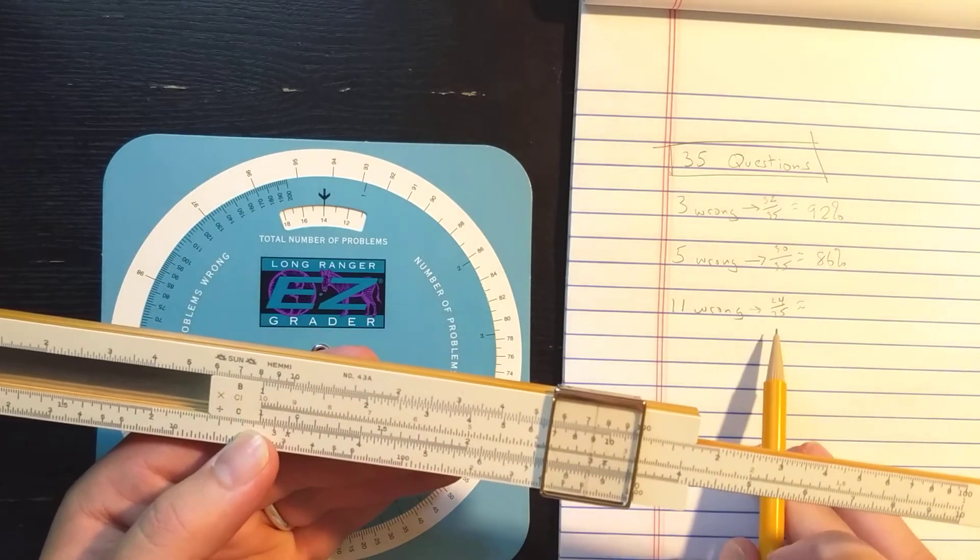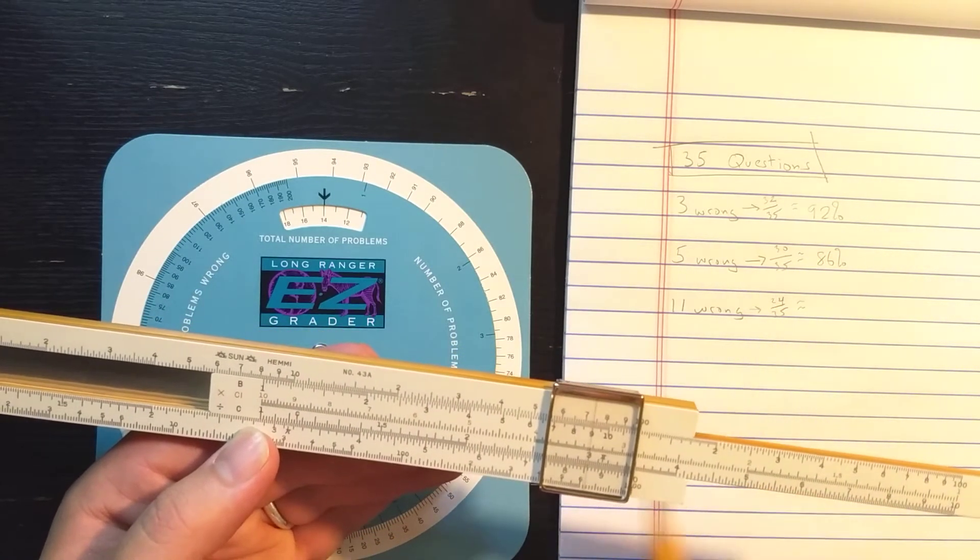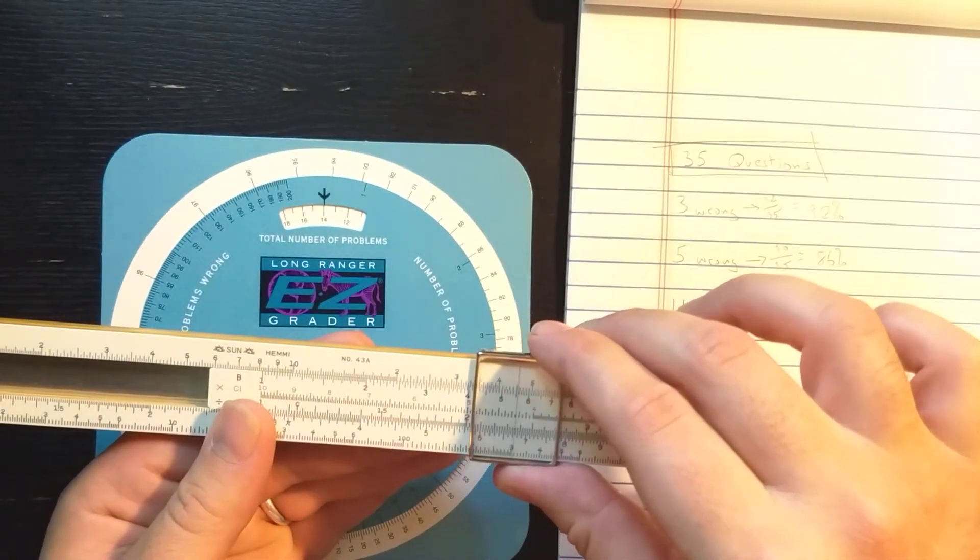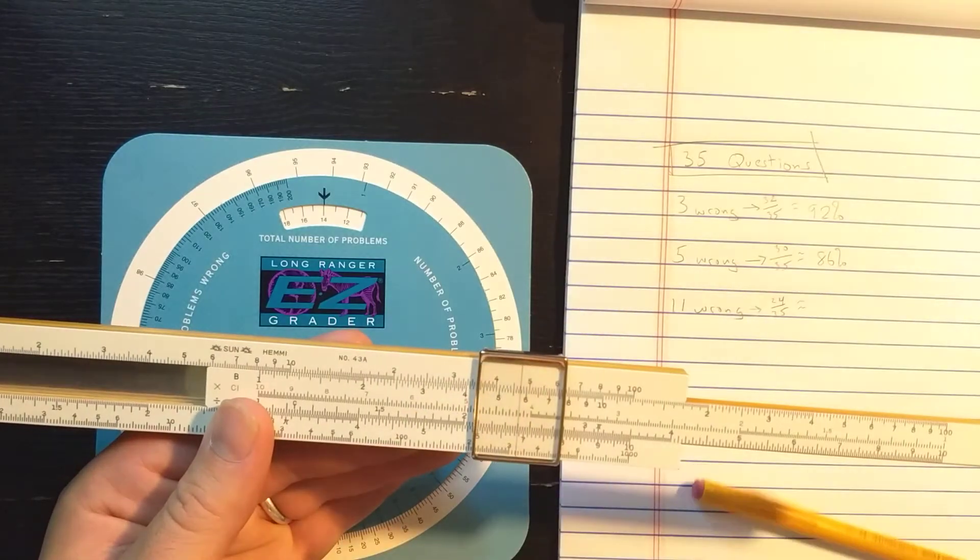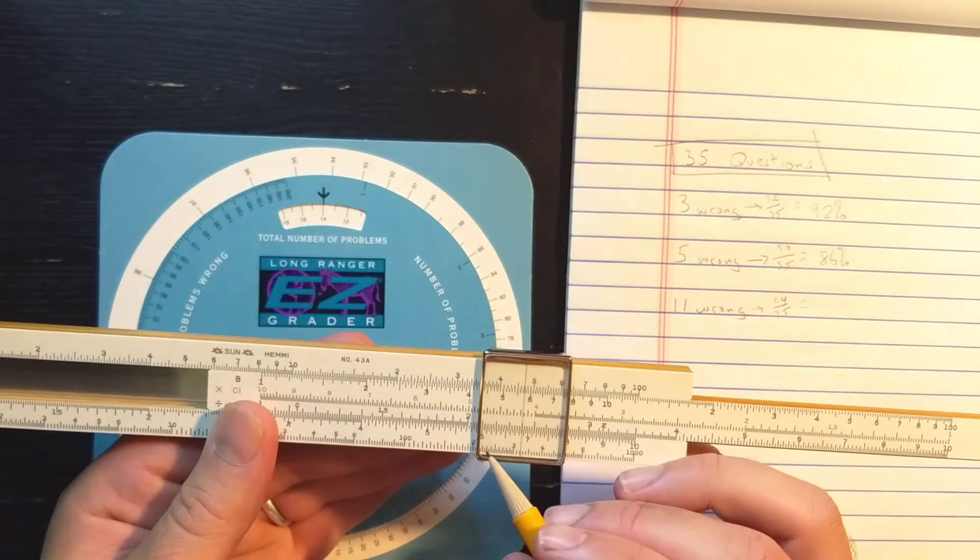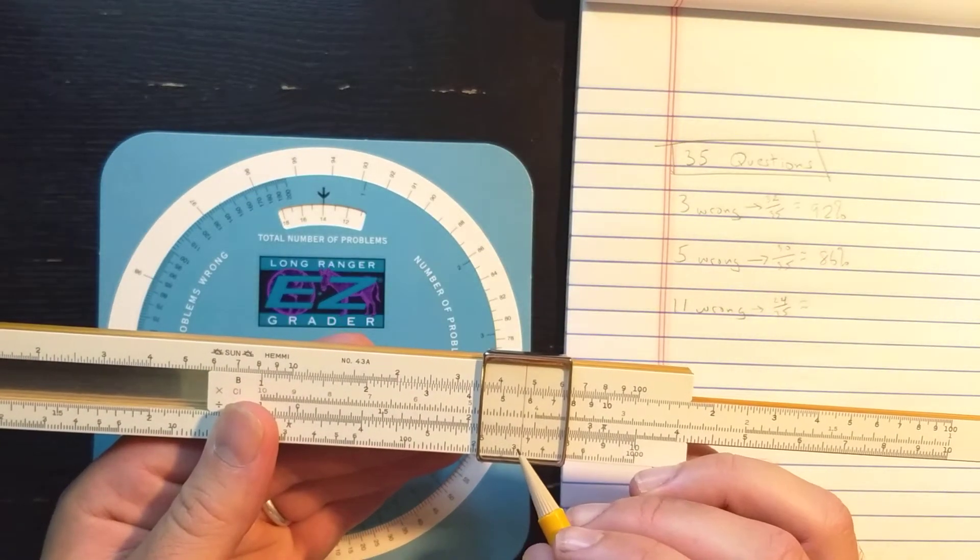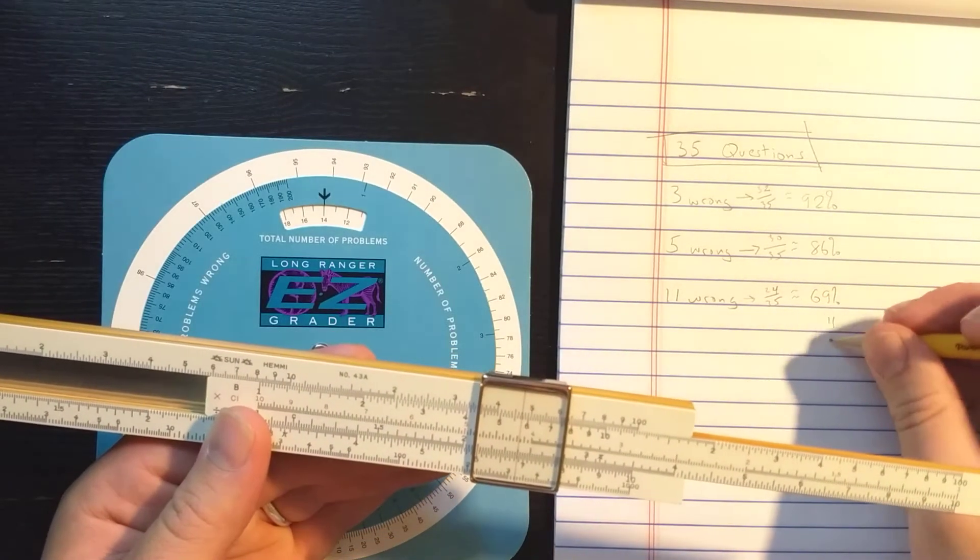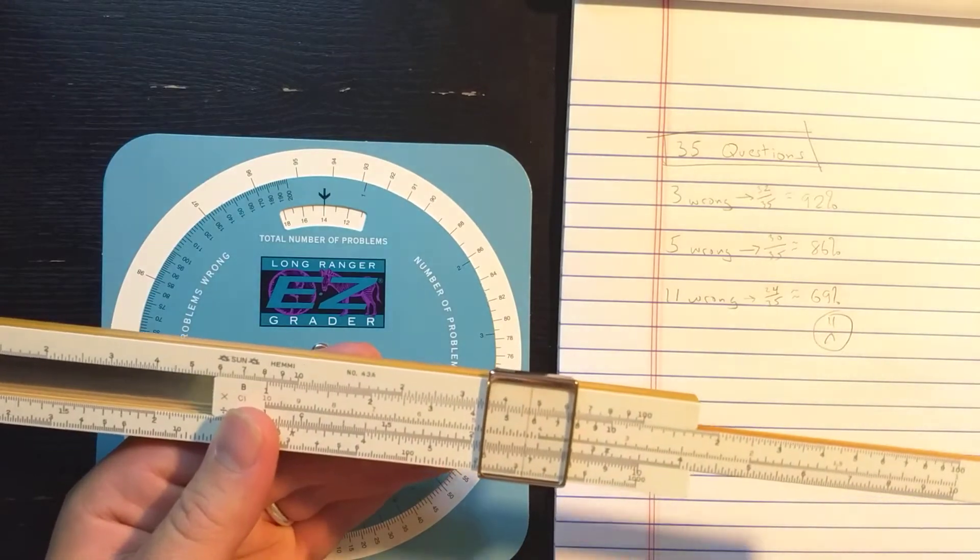And let's say the last student got 24 out of 35 correct, so I'll find the 24. There's 20, 1, 2, 3, 4 on the C scale. And grade 65, 68. It'll round up to 69, but okay. Not a good grade.